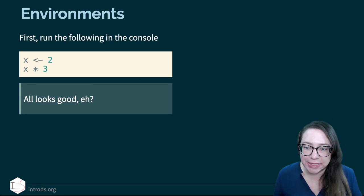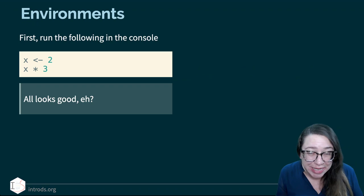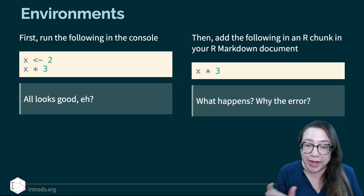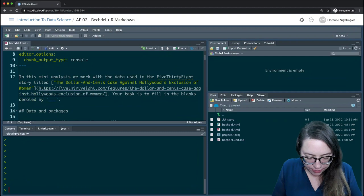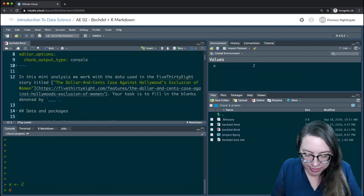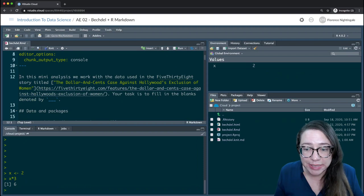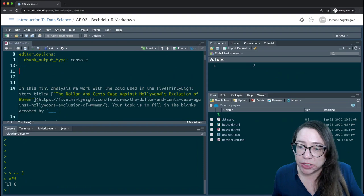Let me give an example. What we'll do is run the following in the console: assign the value 2 to x, then do x times 3 and expect to see 6. Then we're going to insert just that second line, x times 3, into our R Markdown document. So I'm going to type x <- 2, I can see it in my environment, and x times 3 is 6.